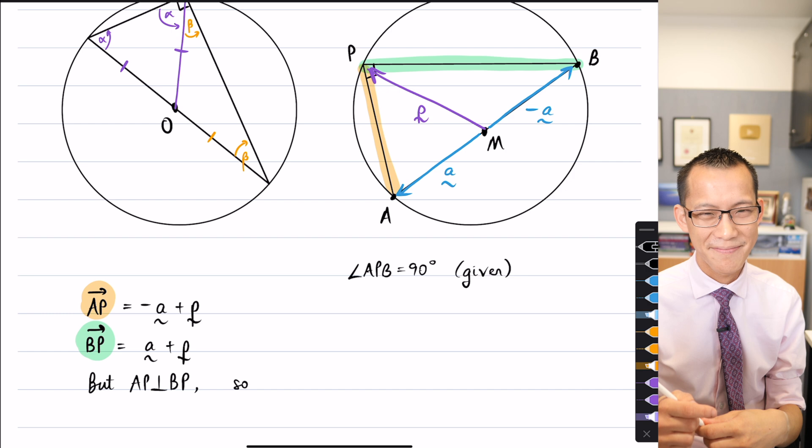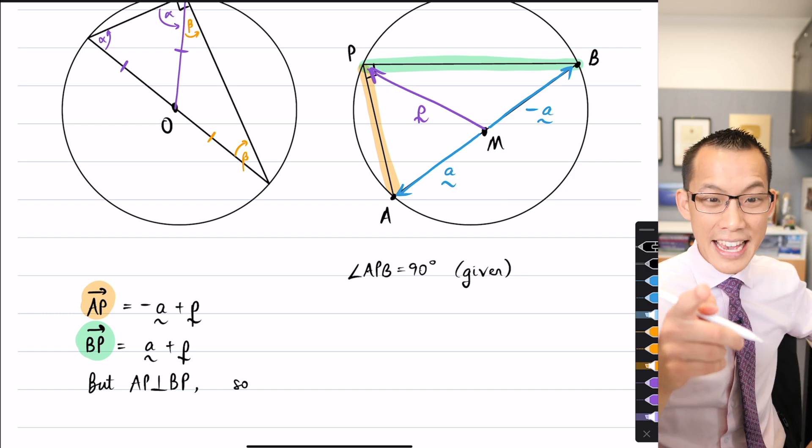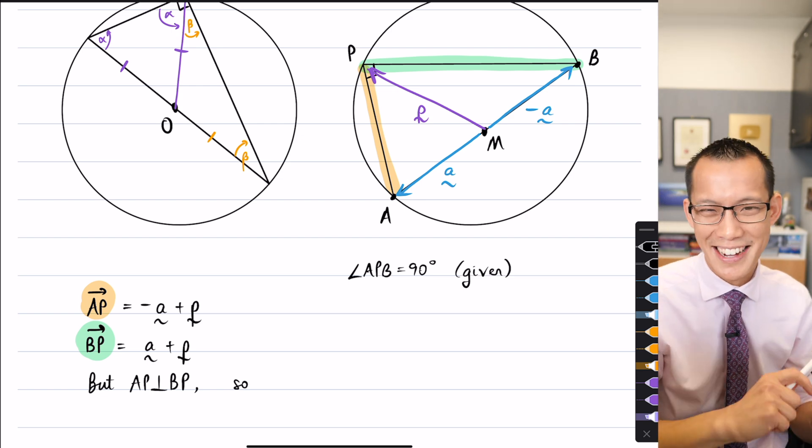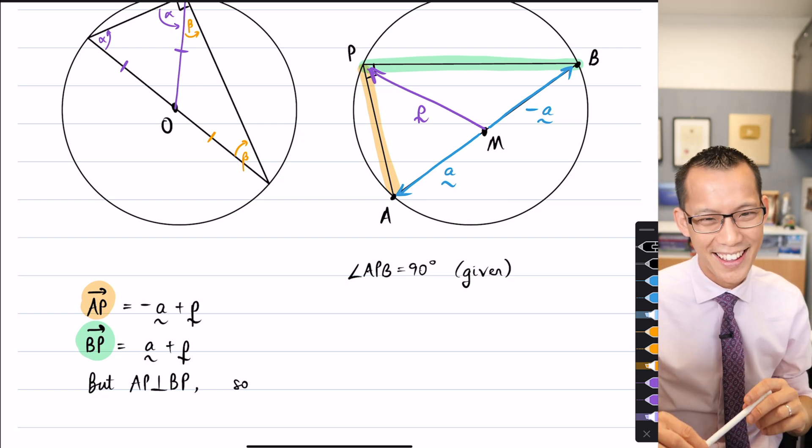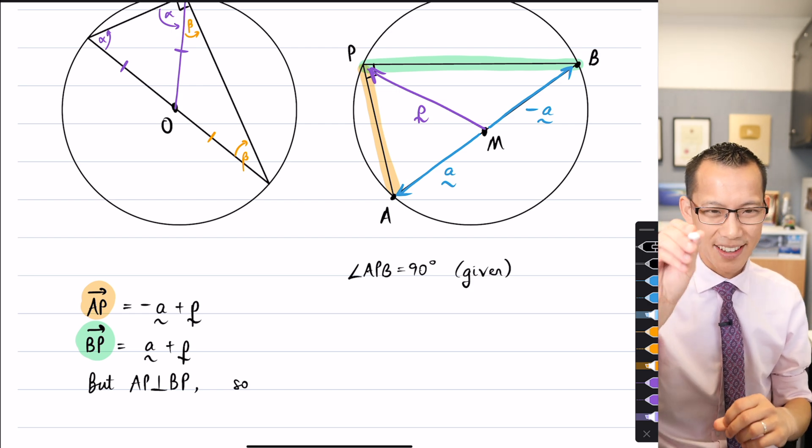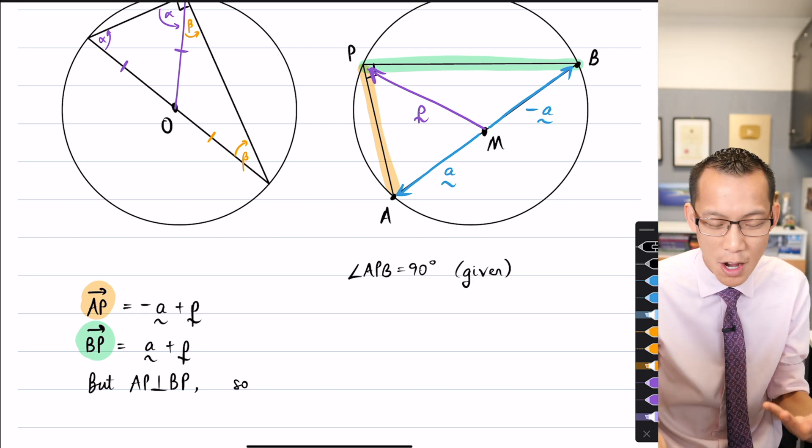There's a particular operation that we can do with two vectors. What is it? It's the product rule. Yeah, it's the product. Hold on, product rule is something we think of from calculus. There's a particular kind of product we introduced. What's the notation? It's a dot. It's the dot product.